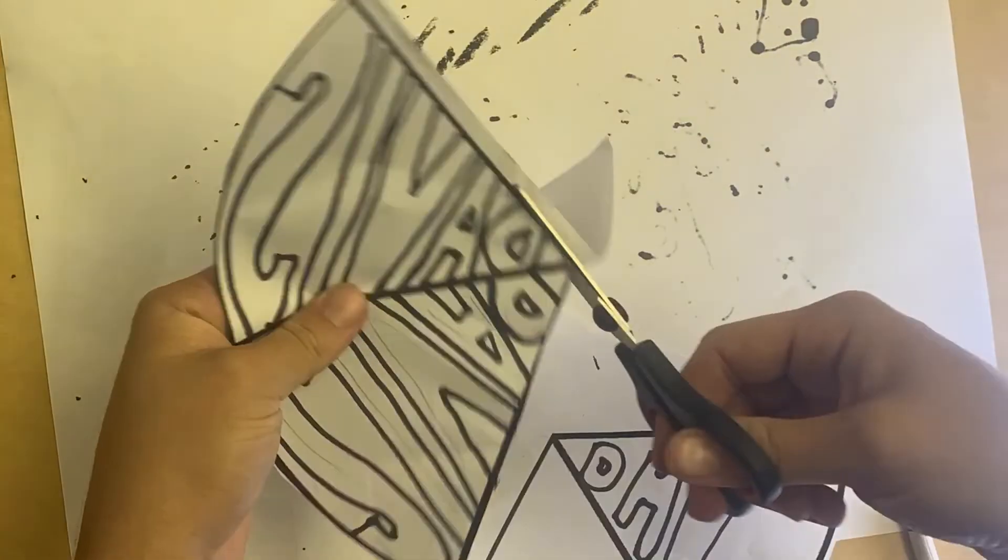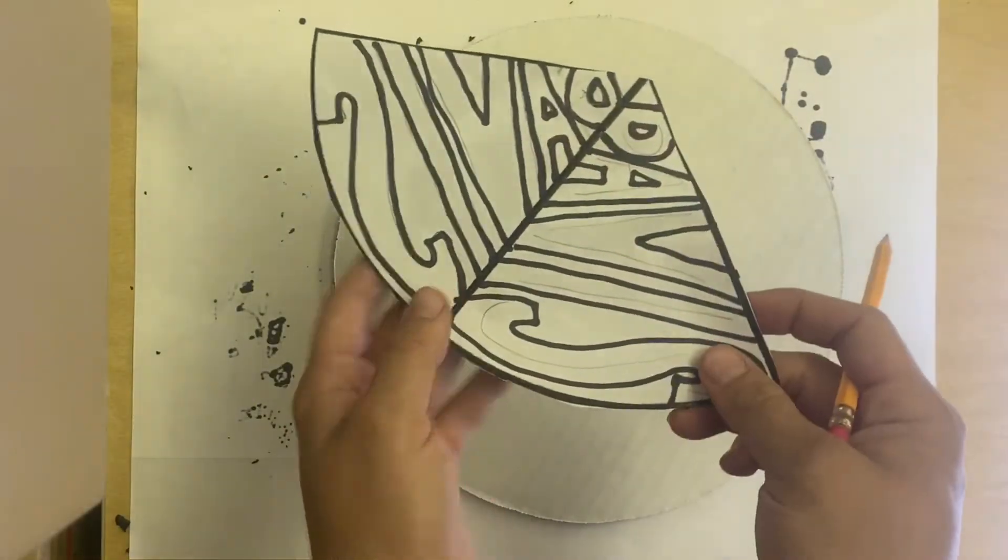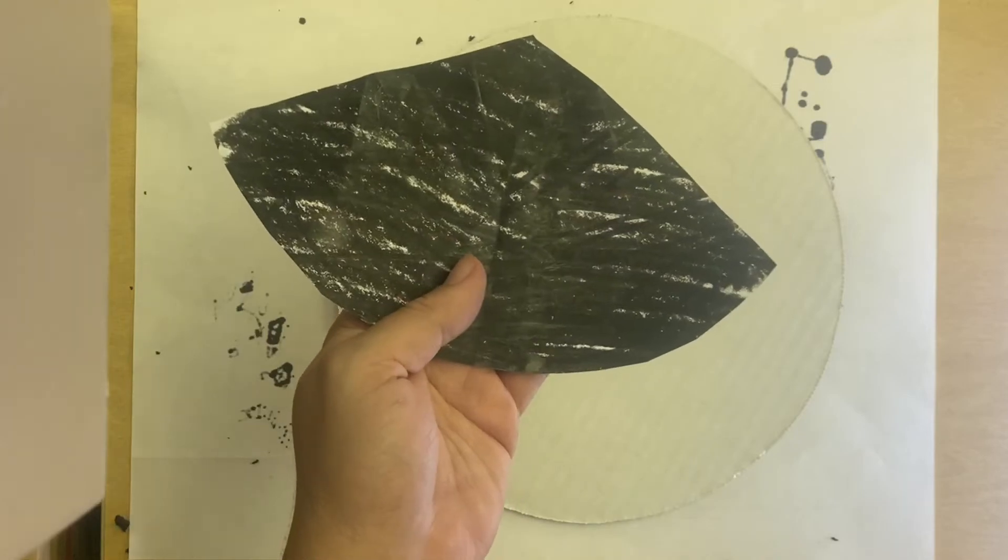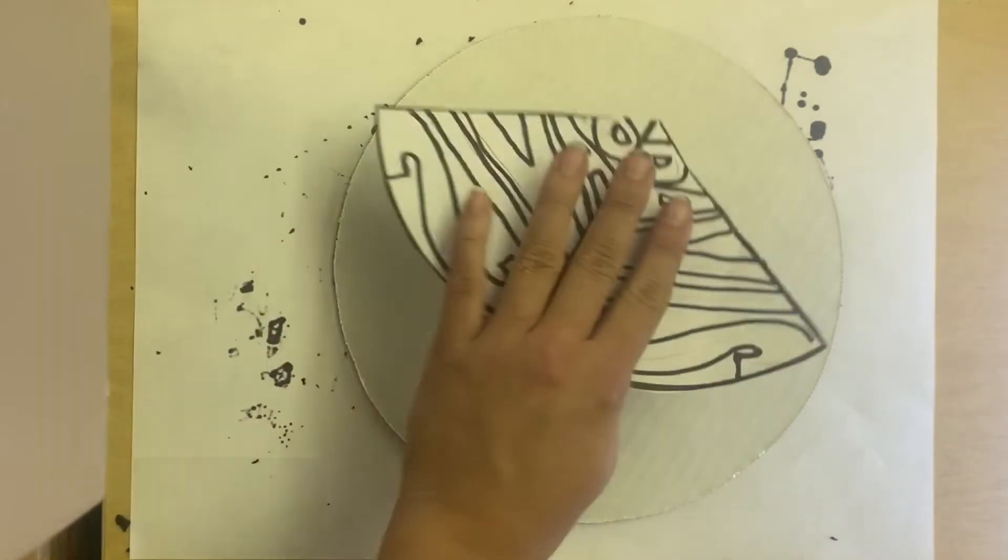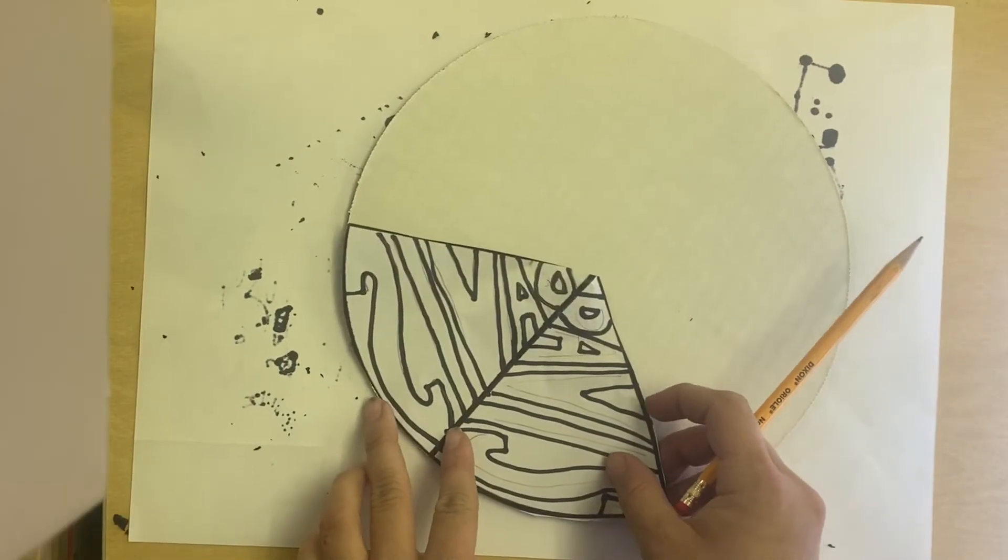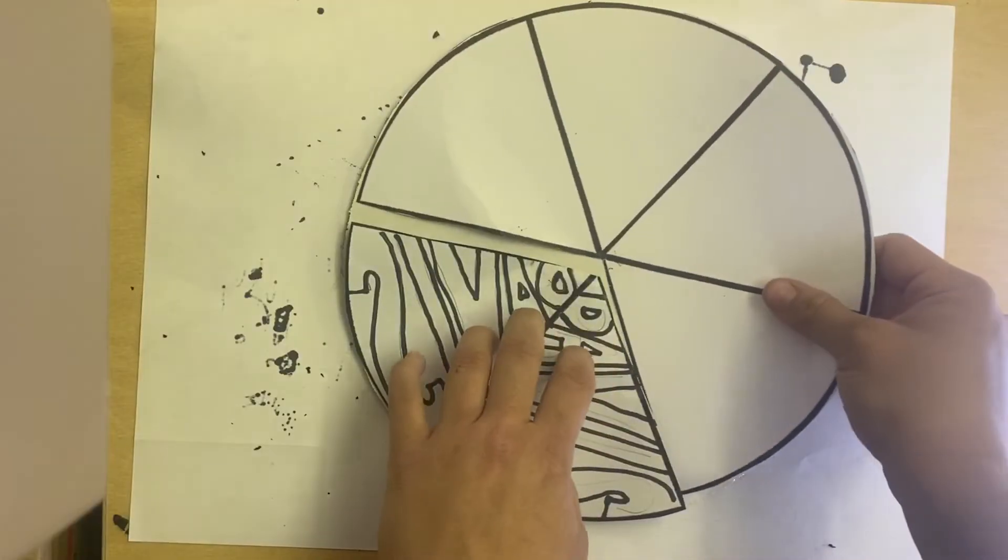After you color, you're going to cut it out. Cut it so that the two pieces are connected. Okay, now that I have my template with the two pieces connected and my black crayon colored on the back, it's time to transfer. When you transfer, you can't just put it in the middle of the circle - you have to put it so that the curve matches the curve.